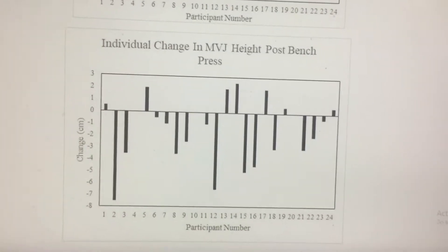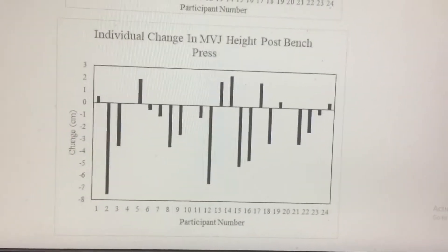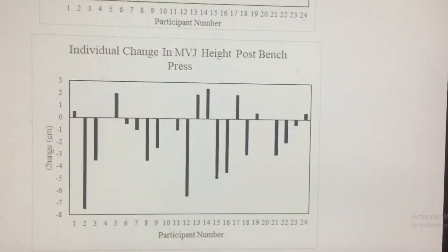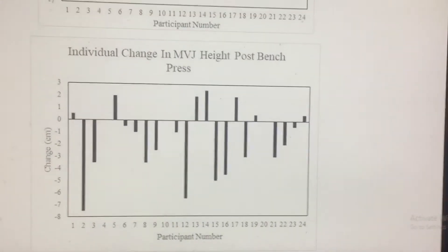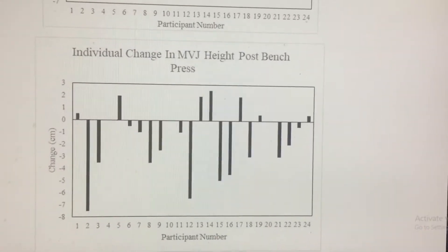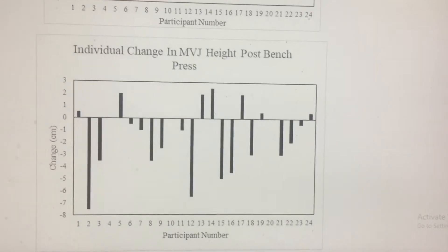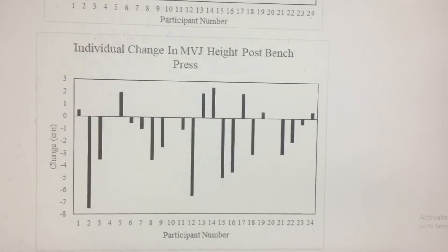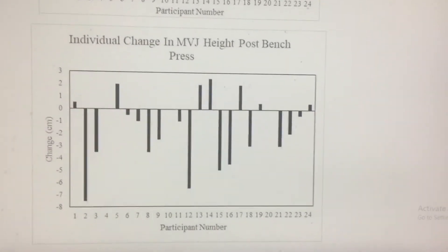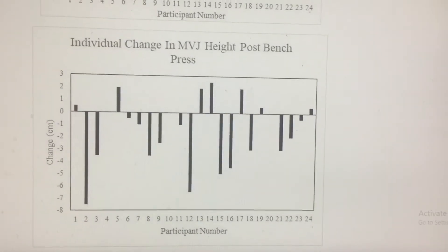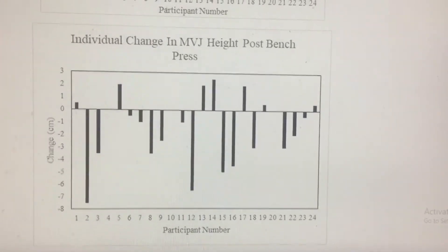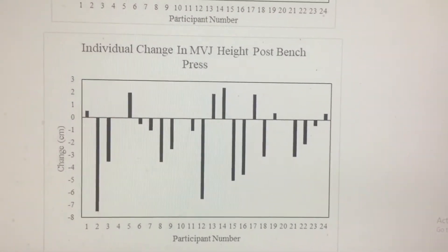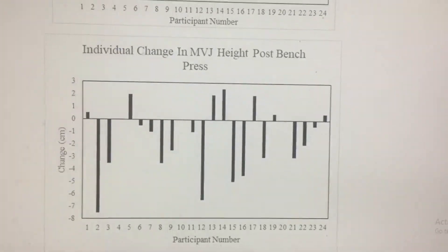On the other hand, if they did a maximal bench press exercise before the vertical jump, you can see that the vertical jump for most of them actually went down. So they had an impairment in their vertical jump performance.